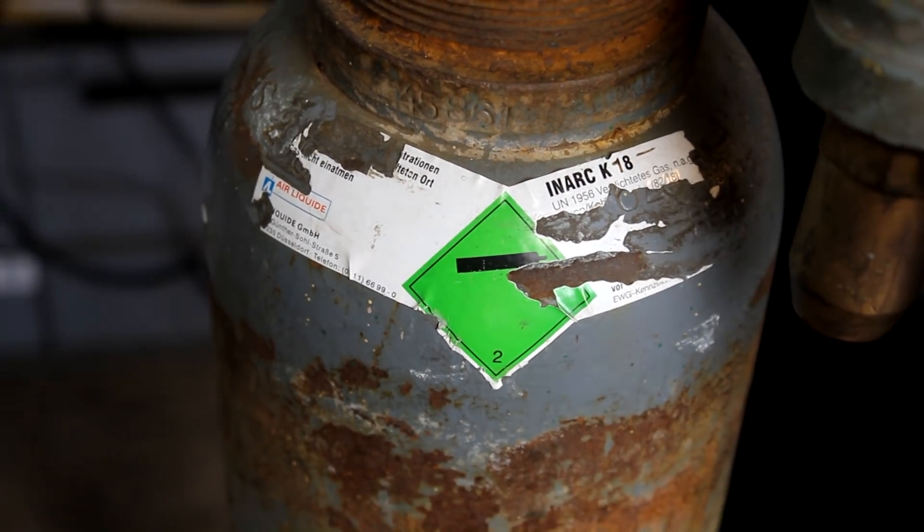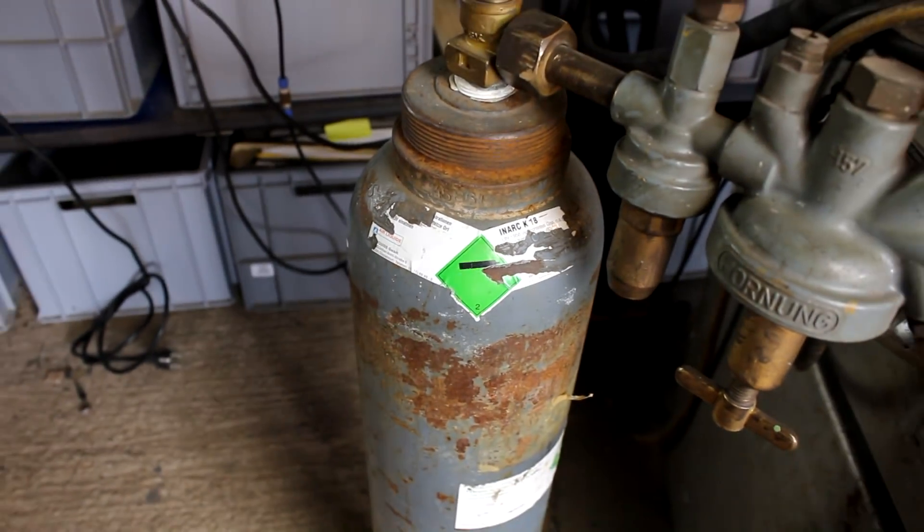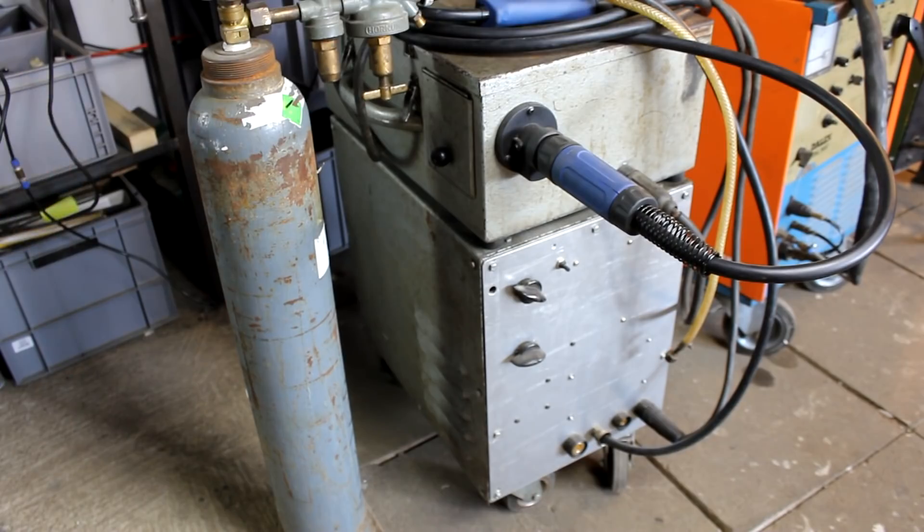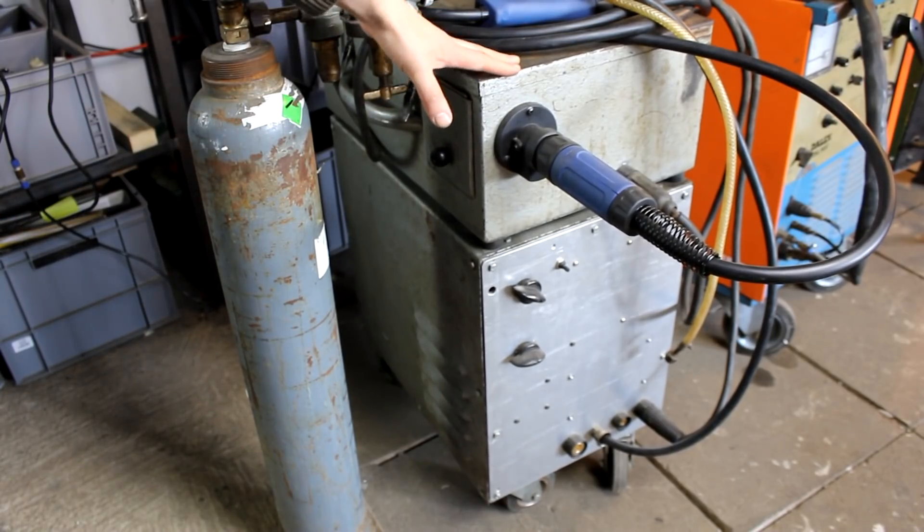And there are many made up trade names for that, like here, INARC, K18, CORGON18 and so on. And though they are technically two different welding processes, they can be done with the same welding machine while people mix them up all the time.